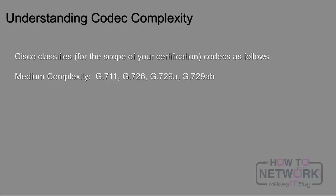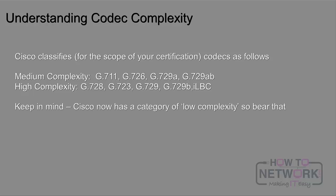In the DSP calculator, G.711 is now classified as a low complexity codec as of 2013. It used to be just medium and high, and now there is a low category. High complexity codecs include G.728, G.723, plain G.729 without an A or B, G.729B, and ILBC. Keep in mind Cisco now has a category of low complexity.